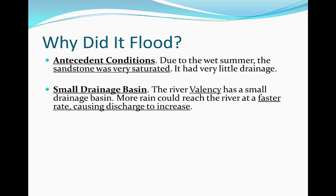Also, Boscastle has a very small drainage basin. The river Valencia, which is the river that flooded in Boscastle, has a small drainage basin. More rain could get into the drainage basin, and as a result, the rate of precipitation getting into the drainage basin exceeded the rate of infiltration, hence making discharge increase.